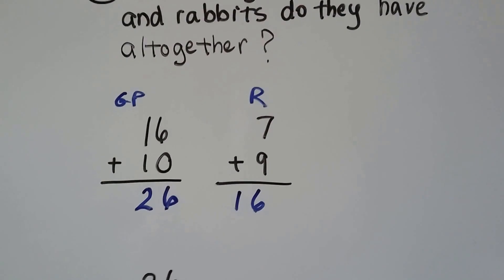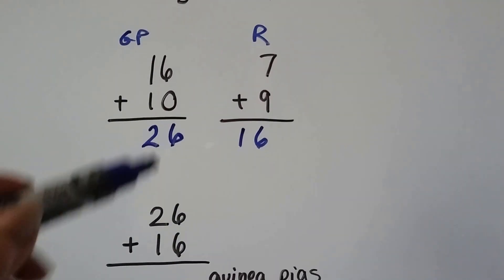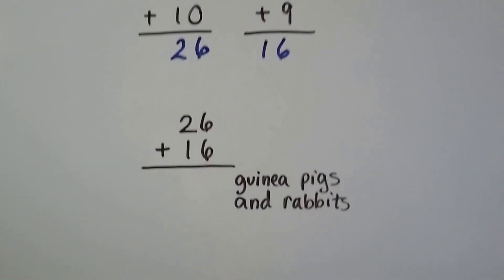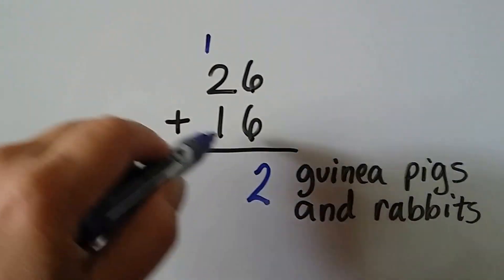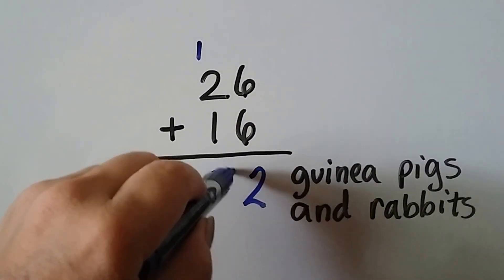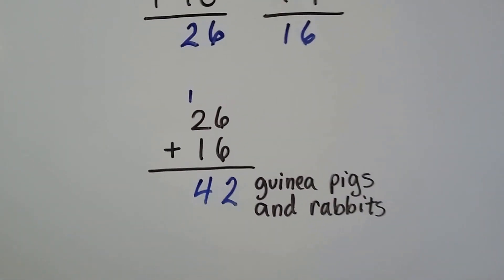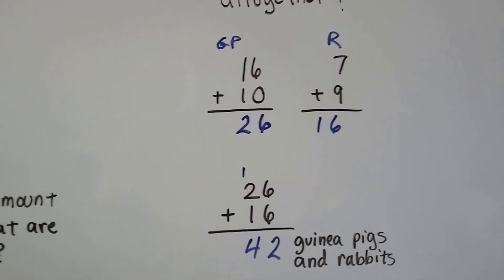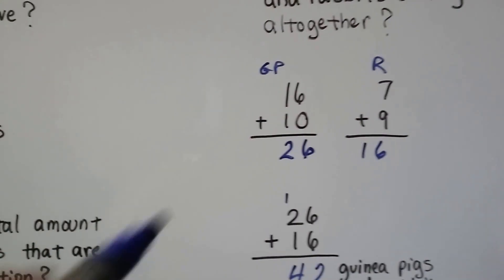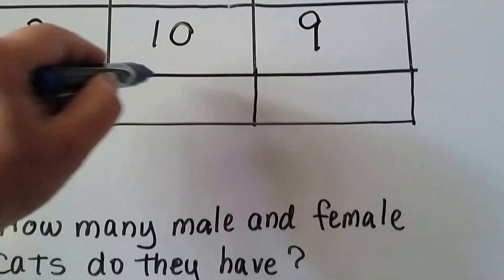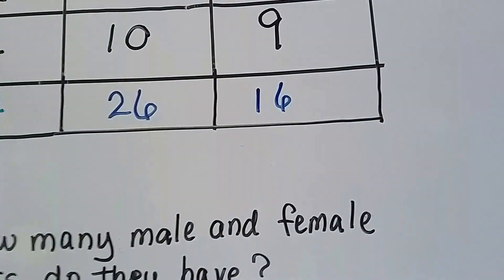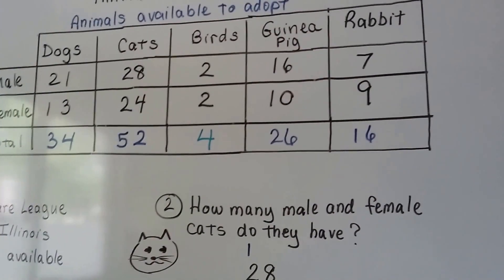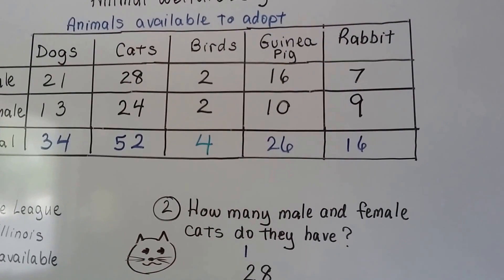The question asks how many guinea pigs and rabbits altogether, so we add the 26 guinea pigs and 16 rabbits together. Six plus six is 12 — that's a double. One, two, three, four — they have 42 guinea pigs and rabbits available for adoption. We can put those totals into the table: 26 guinea pigs (16 plus 10) and 16 rabbits. Now we've got all the totals. They also have 4 birds — parakeets, maybe even a parrot.